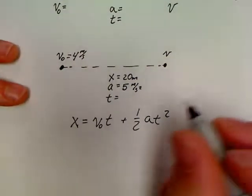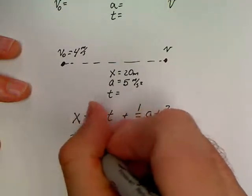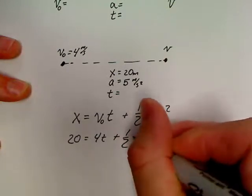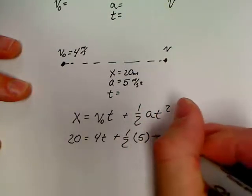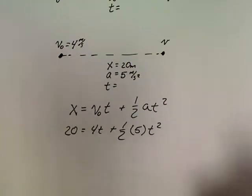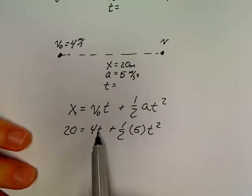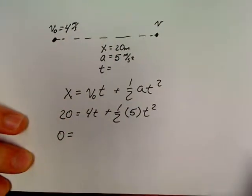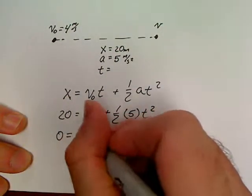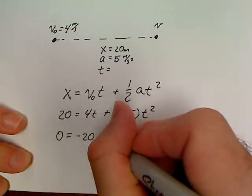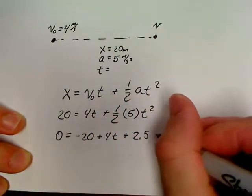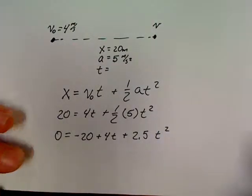Now, if you go ahead and plug in your variables, you're going to have 20 equals 4T plus 1/2 times 5T squared. Pretty soon, right off the bat, you should notice, with a T and a T squared for an unknown, we've got a quadratic. So let's set it up in quadratic form. 0 equals negative 20 plus 4T plus 2.5T squared.